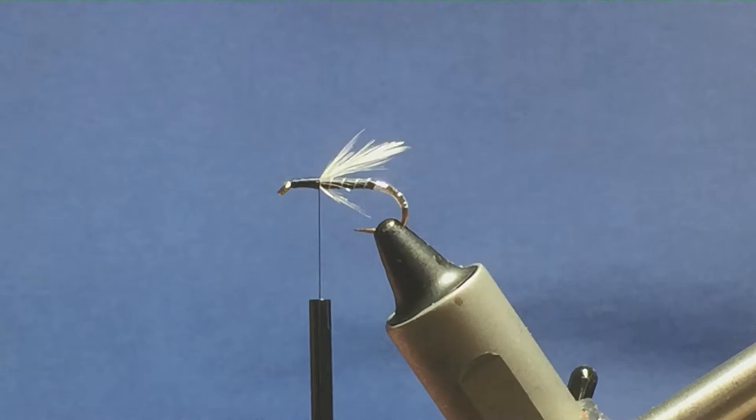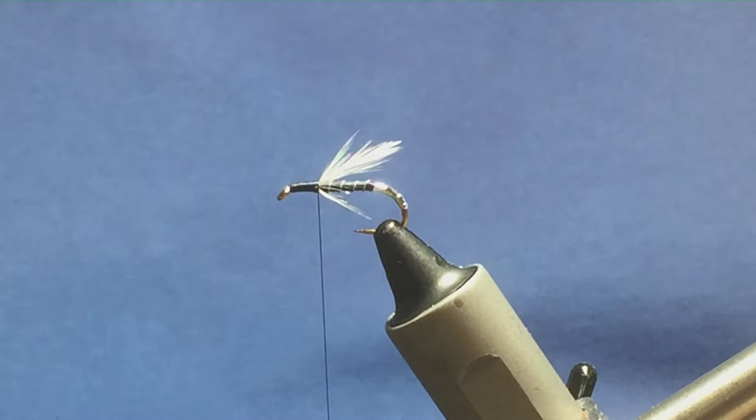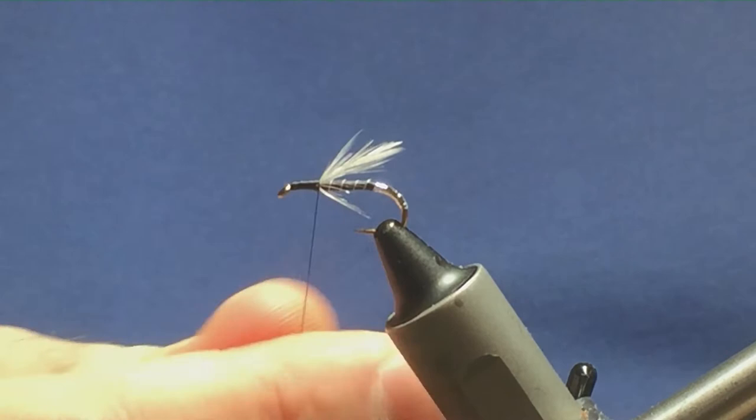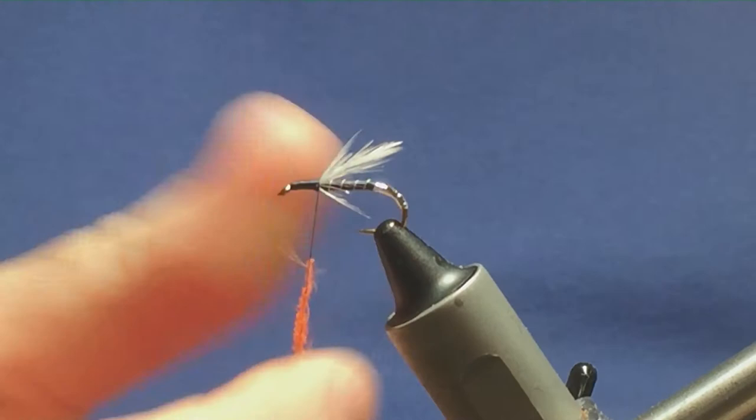Next part of the fly is the thorax. And this is the original pattern I'm tying. So I'm going to use some hot orange seal's fur for the thorax. Now you only need a wee pinch of this. Get it dubbed on.